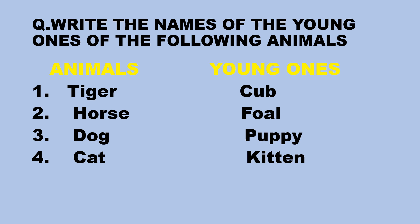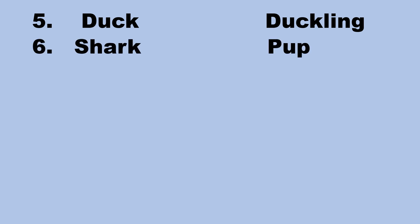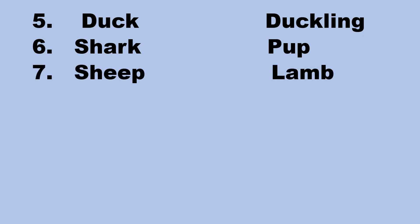Number four, cat — the young one of a cat is called a kitten. Number five, duck — the young one of a duck is called a duckling. Number six, shark — the young one of a shark is called a pup. Number seven, sheep — the young one of a sheep is called a lamb.